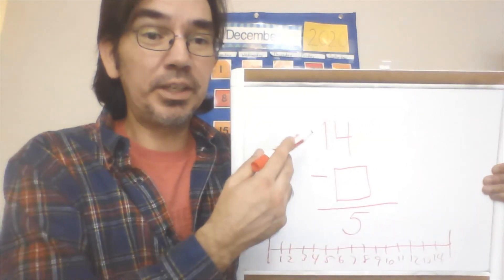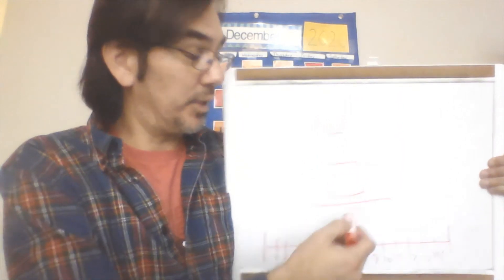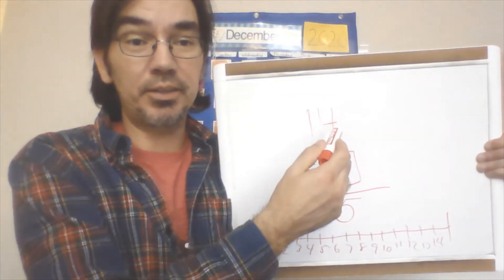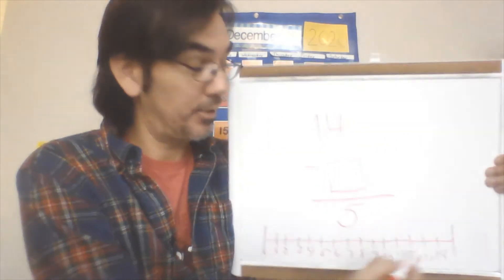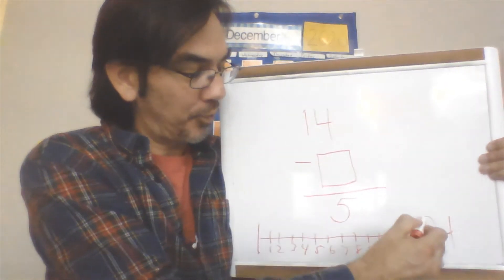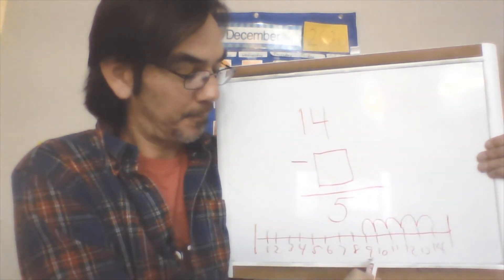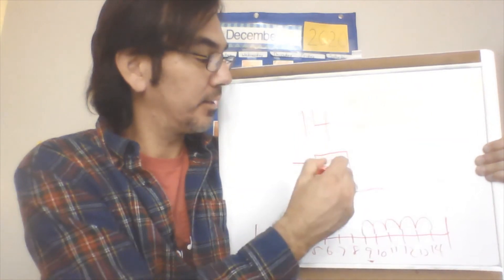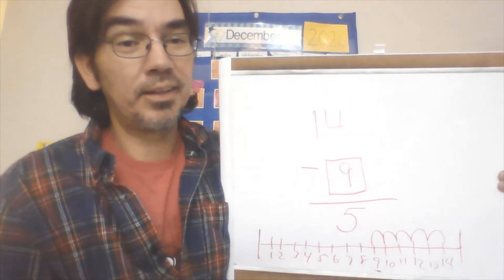So let's take a look. 14 minus something equals 5. I can do it either way. I can start at five and count on till I get to fourteen, or I can start at fourteen and count back. I'm going to count back this time. I'm going to count back five. Start at fourteen: one, two, three, four, five. What did I land on? Nine. 14 minus 9 equals 5.